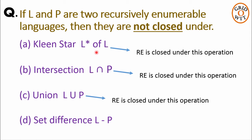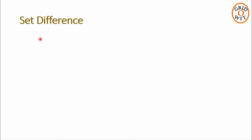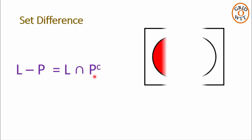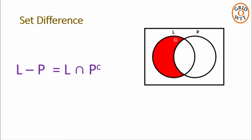Now let's analyze option D, the set difference. If L and P are two recursively enumerable languages, then set difference L minus P can be rewritten as L intersection P complement. Looking at the Venn diagram: P complement means everything except P, and when we take the intersection of that region with set L, the result is L but not P, which is L minus P.